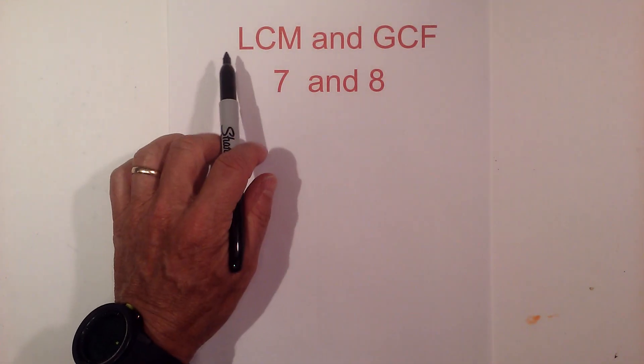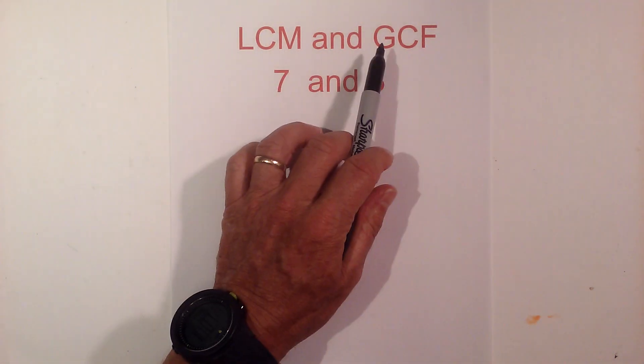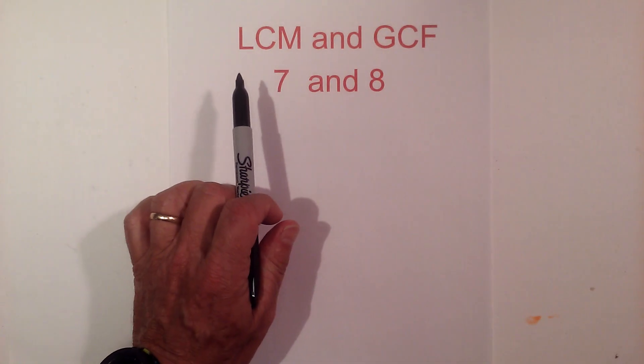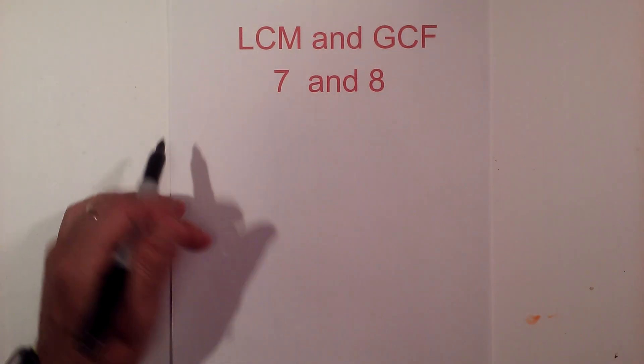In this video, let's find the lowest common multiple and the greatest common factor of 7 and 8. Let's start with the greatest common factor first.